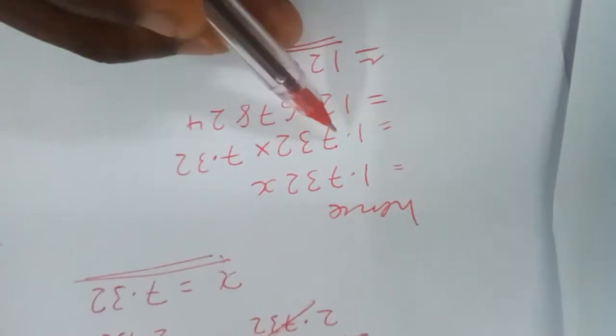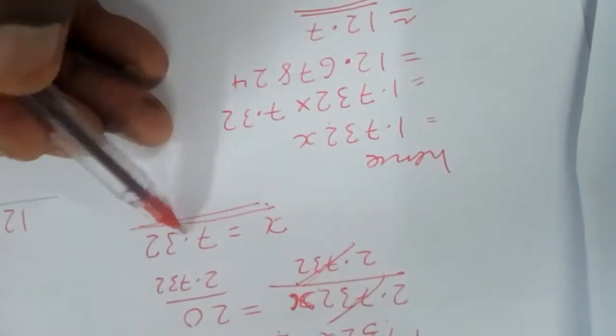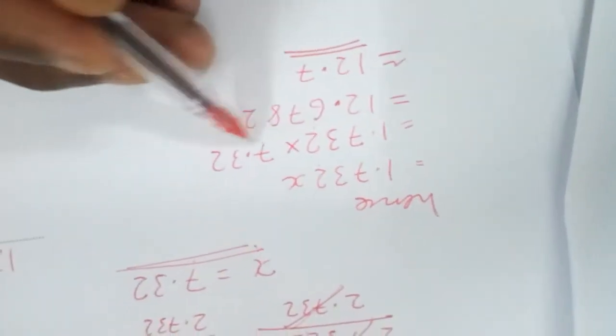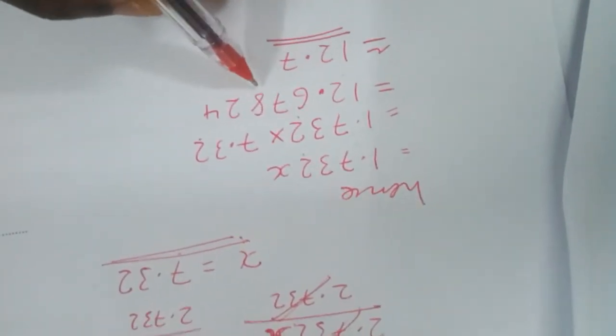Therefore, I will take that. I will substitute x with 7.32. Hence, I will multiply this and that, and I will obtain 12.678.